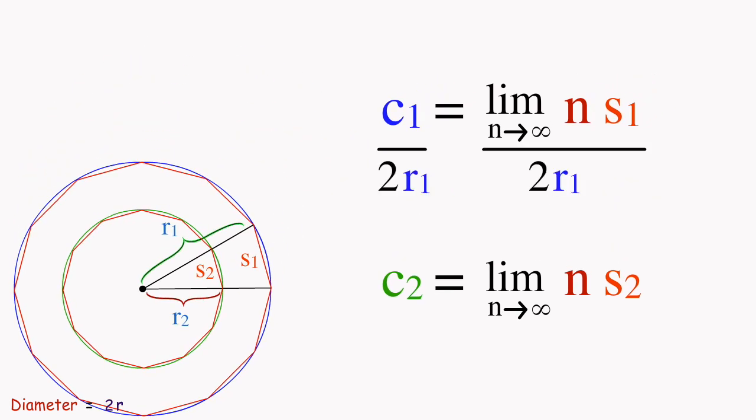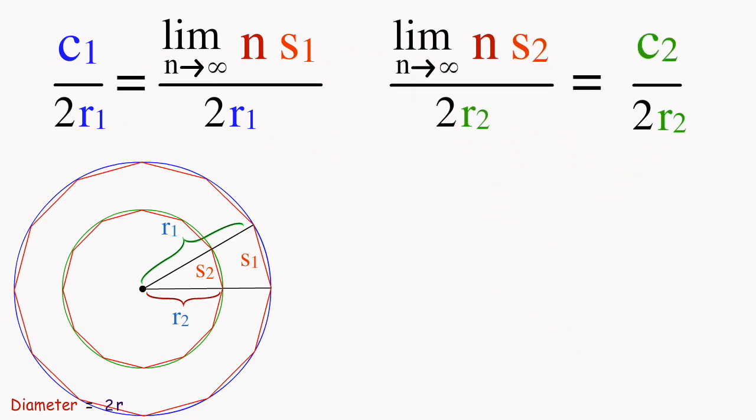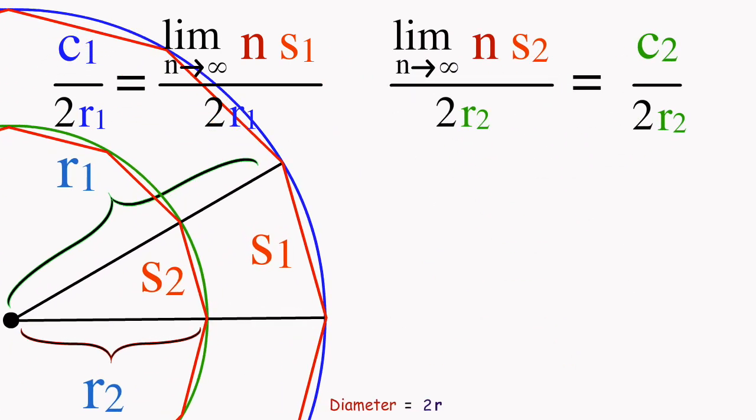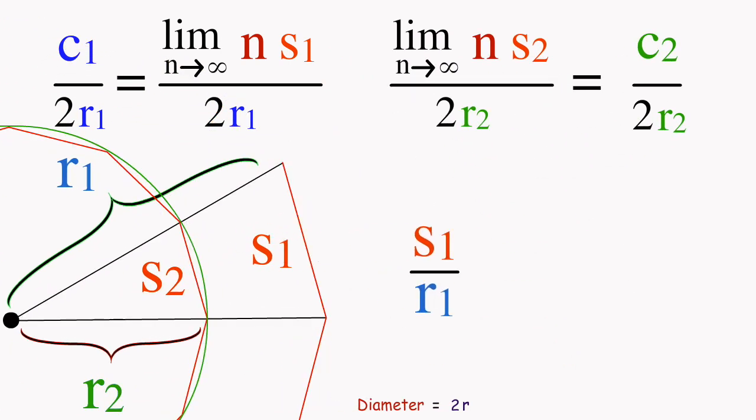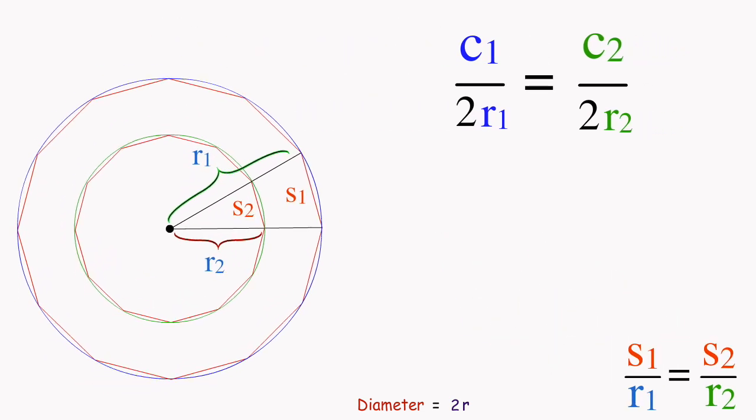So let's divide each circle's circumference by two times its radius. Now here comes the key part. Using the law of similar triangles, s1 over r1 is equal to s2 over r2. This relationship is similar to the equations above and in fact they are equal. Therefore, both circumferences over two times their radiuses are equal.